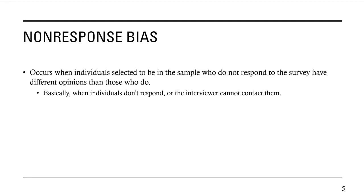The next type of bias is non-response bias. This occurs when individuals selected to be in the sample who do not respond to the survey have different opinions than those who do. Basically, when individuals don't respond or the interviewer can't contact them, you have non-response bias. This happens with surveys you get after visiting somewhere or having a call with someone — a lot of those surveys end up with non-response bias because typically the ones who participate are the ones who have really strong feelings, either very dissatisfied or extremely satisfied.